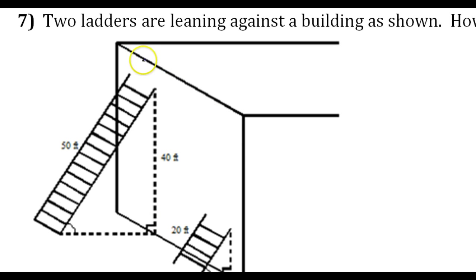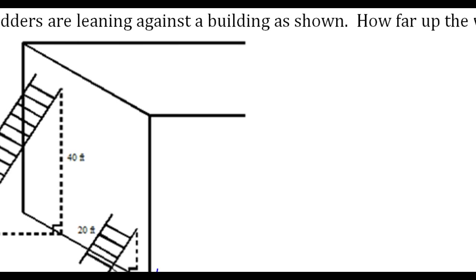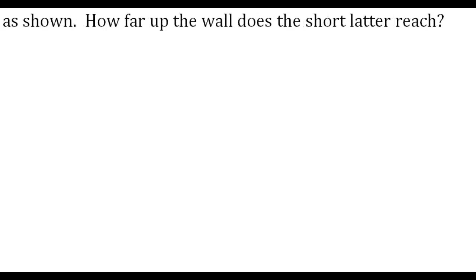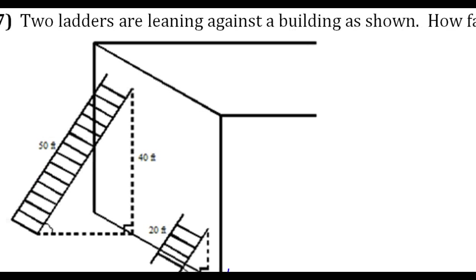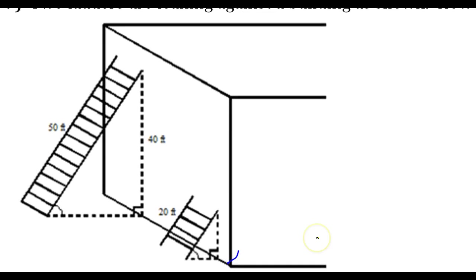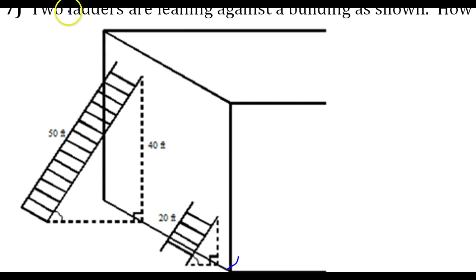Two ladders are leaning against a building as shown. How far up the wall does the short ladder reach? Alright, so we've got similar triangles being formed. We can tell by the angle-angle similarity theorem. We've got two pairs of congruent angles.